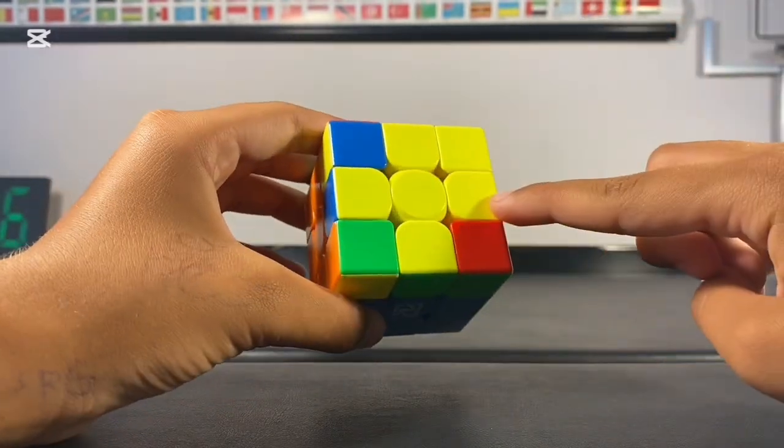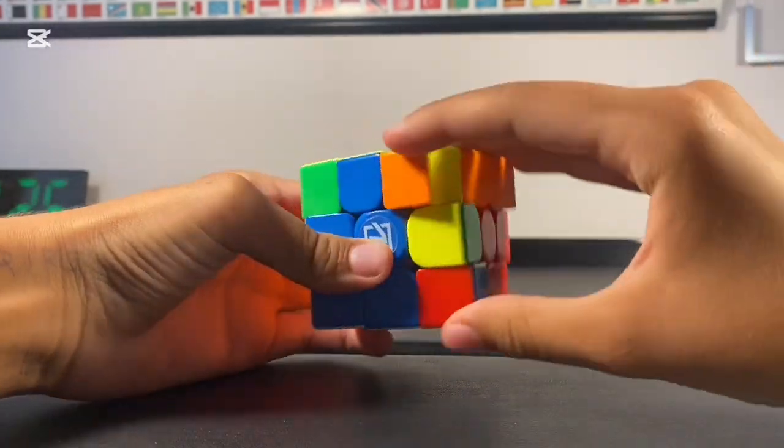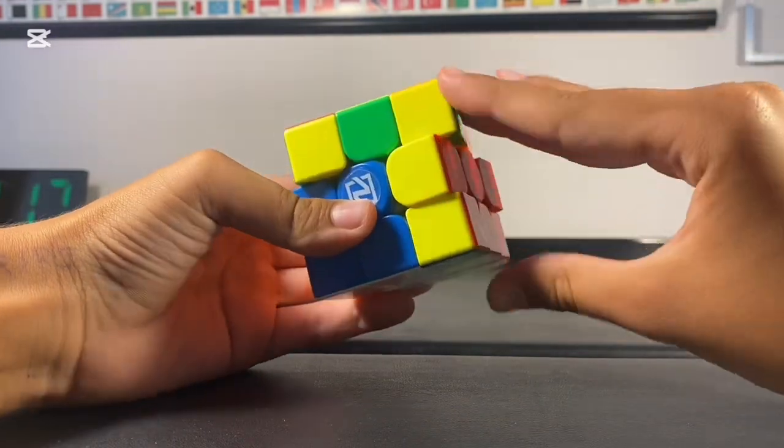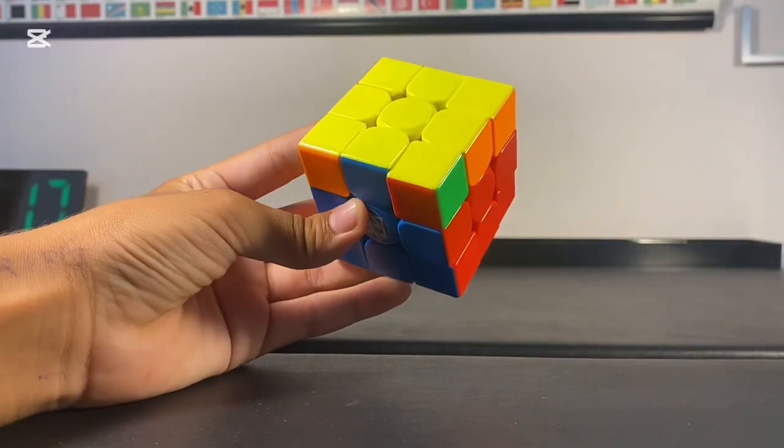After having done the cross, you want to do the corners. This step is easy. You just have to do this algorithm until you have oriented all the corners. R-U-R prime U-R-U-2-R prime.